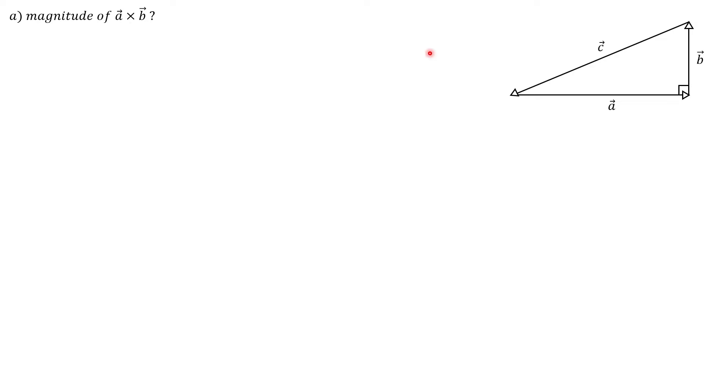And so for part A, we are asked to compute the magnitude of the cross-product between vectors A and B. And so the first thing that we can do is write out the equation for the magnitude of the cross-product of two vectors, and in this case for A and B, that's going to be the magnitude of A times the magnitude of B times the sine of the angle between them.